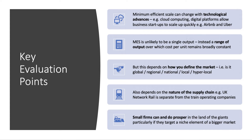Here are some key A-star evaluation points. First, the minimum efficient scale can and does change with technological advances. In many digital markets — online fashion, online music, online trading — lots of firms can very quickly set up competing cloud services and digital platforms, so you can scale particularly quickly and it becomes very hard to estimate what the minimum efficient scale actually is. Second, the minimum efficient scale is not a single output — it's much more likely to be a range of production over which the unit cost is broadly constant. Don't necessarily expect a U-shaped curve; oftentimes businesses operate with fairly flat cost curves in the long run.